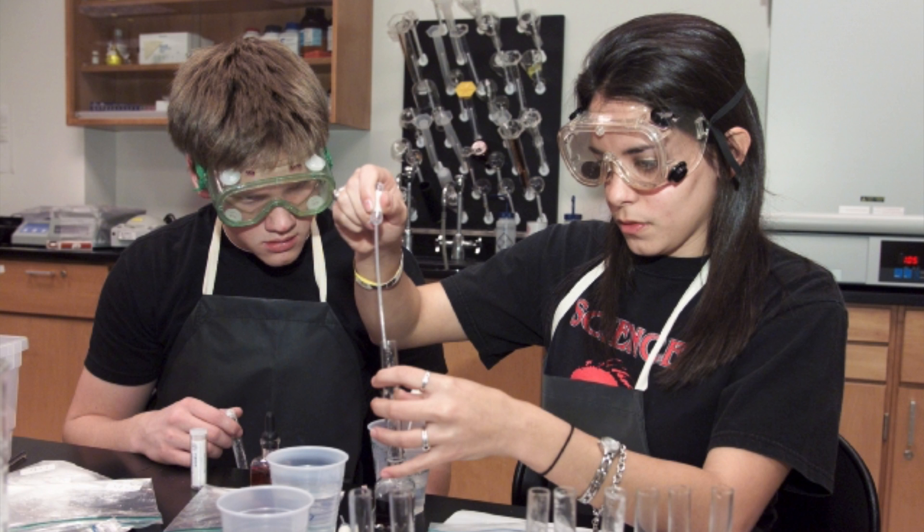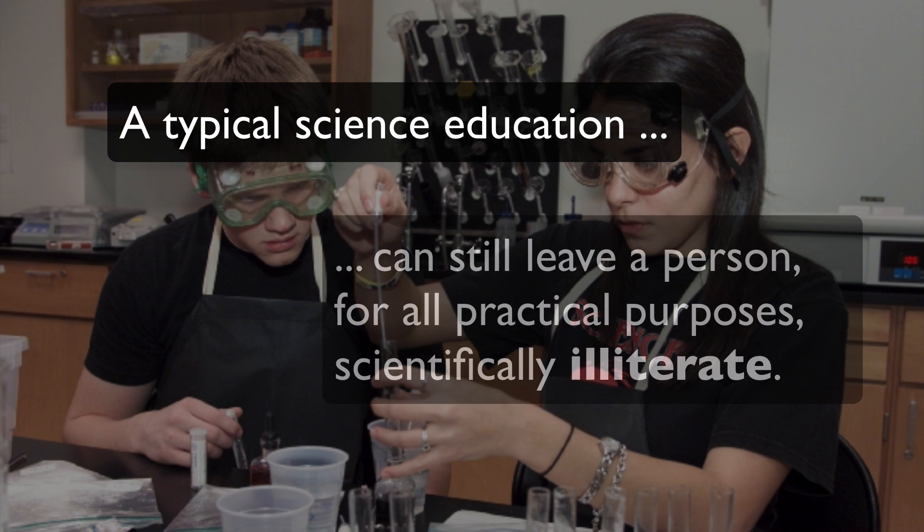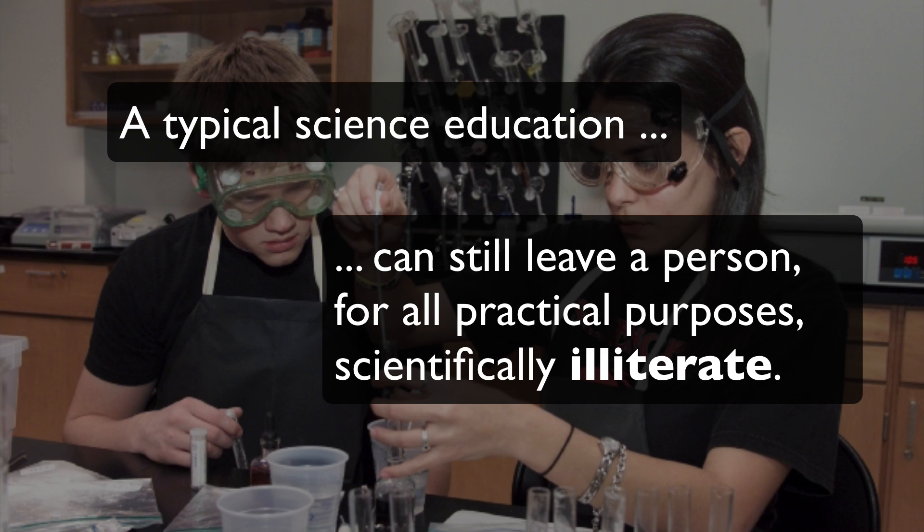And I'm going to argue for a position that is going to upset some people. I'm going to argue that a typical science education, leading to an undergraduate degree or even a graduate degree in science, can still leave a person, for all practical purposes, scientifically illiterate. And this is a problem if we want one of the goals of science education to be science literacy.